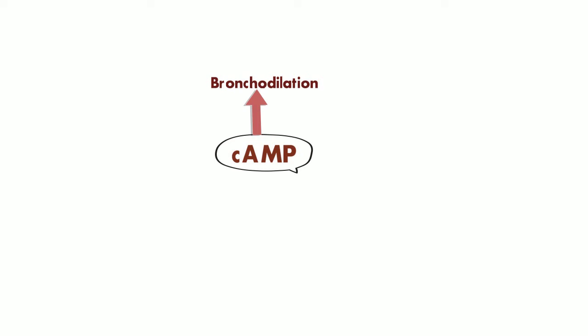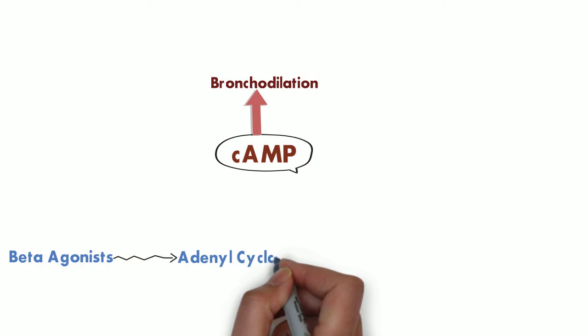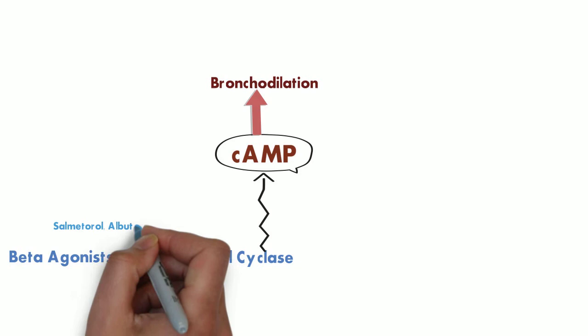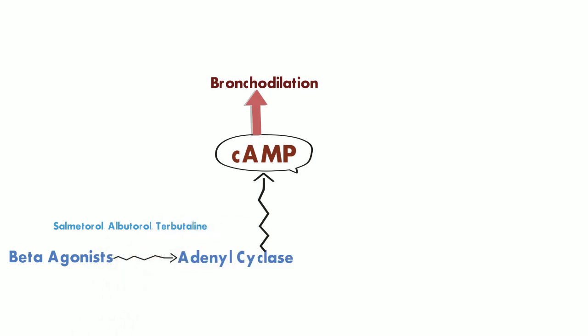In this class we have two drugs: one is the beta agonist and the other is the phosphodiesterase inhibitors. The beta agonists include drugs like salmeterol, albuterol, and terbutaline. These act by inducing the enzyme adenyl cyclase, which increases the level of cyclic AMP, and this increased level of cyclic AMP causes bronchodilation.